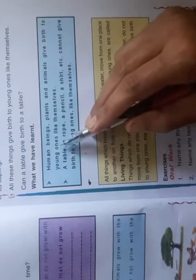Human beings, plants, and animals are living things. A table, a rope, a pencil, and a shirt cannot give birth - these are non-living things.